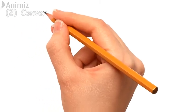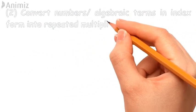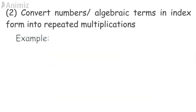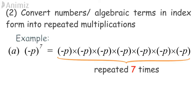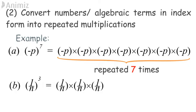Number 2: convert numbers or algebraic terms in index form into repeated multiplications. Example A: (−p)^7 equals (−p) repeatedly multiplied 7 times. Example B: (1/n)^3 equals (1/n) repeatedly multiplied 3 times.